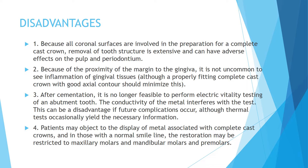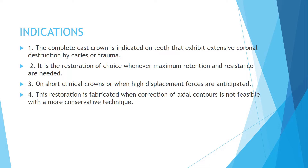Coming to the indications: the complete cast crown is indicated on teeth that exhibit extensive coronal destruction from caries or trauma. It is the choice of restoration whenever maximum retention and resistance is required — on short clinical crowns or when high displacement forces are anticipated. It can also be used when correction of axial contours is not feasible with more conservative techniques.